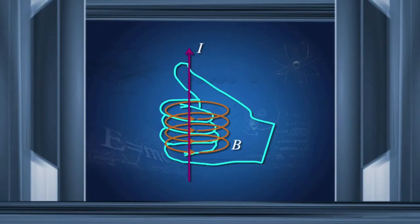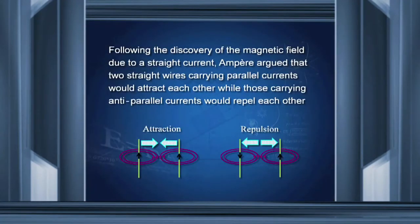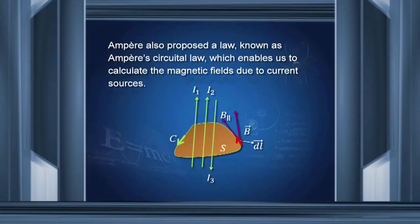As shown here, stretch the thumb of the right hand in the direction of the current; the fingers then give the direction of the field lines. Following the discovery of the magnetic field due to a straight current, Ampere argued that two straight wires carrying parallel currents would attract each other, while those carrying currents in opposite directions would repel each other. Ampere also proposed a law known as Ampere's circuital law, which enables us to calculate the magnetic field due to current sources.